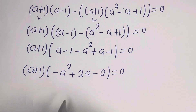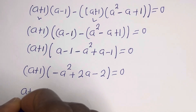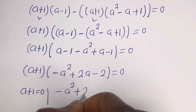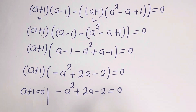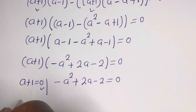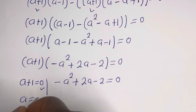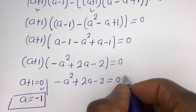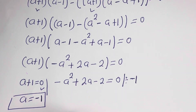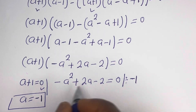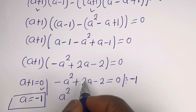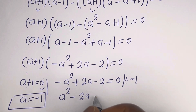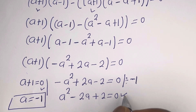Then we have a plus 1 bracket, bracket, a minus 1 minus a squared plus a minus 1 is equal to 0. Simplifying inside: a plus a is 2a, minus 1 minus 1 is minus 2, so we get minus a squared plus 2a minus 2 is equal to 0. There are two cases: the first case is a plus 1 equals 0, giving a equals minus 1. For the second case, dividing all by minus 1 gives a squared minus 2a plus 2 equals 0.